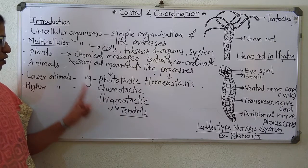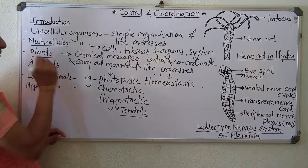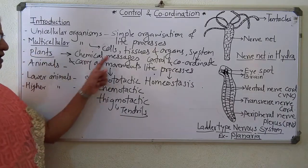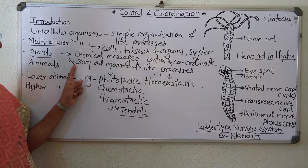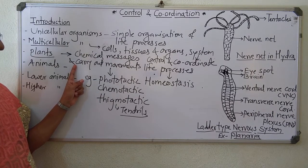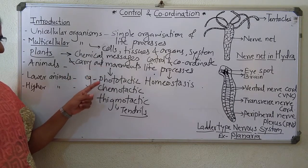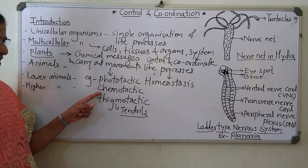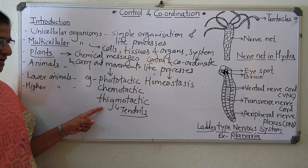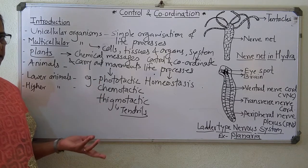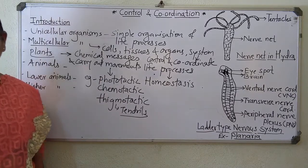In the case of plants, chemical messages and movements like phototactic, chemotactic, and thigmotactic are one kind of control and coordination.